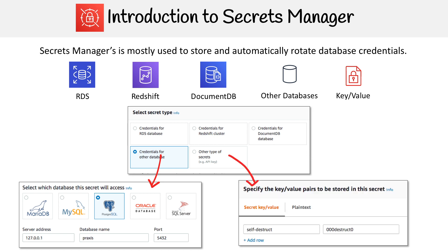For other types of secrets, it's just a key-value pair. If you go over to plain text, that doesn't mean you can encrypt a plain text file — it's just another representation of that key and value, so you can work with a JSON object. Those are all the secret types available.